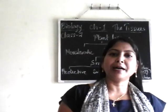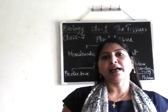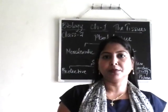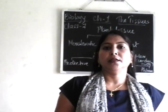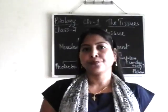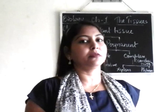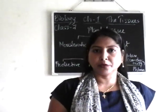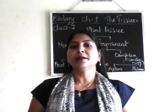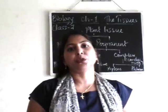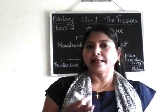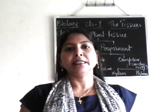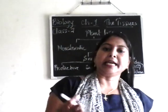Hello class 7, welcome back. Again I am back with biology and as you know that we are doing chapter number 1. I have already started with plant tissue and introduced the various types of plant tissue. There are two main types of plant tissue: meristematic tissue and permanent tissue. We have already done meristematic tissue and from permanent tissue we have completed the simple permanent tissue and their types.